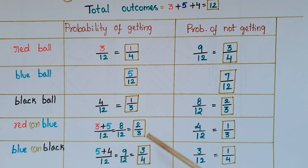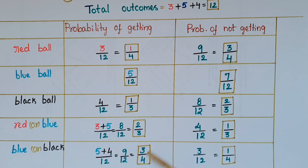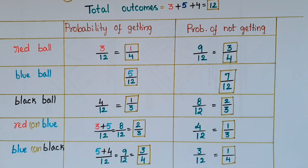Probability of getting a blue or black ball: five blue plus four black is nine, giving nine by 12 equal to three by four. Probability of not getting blue or black balls: the remaining are red balls, so three by 12, that is equal to one by four.